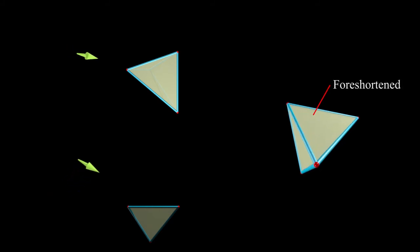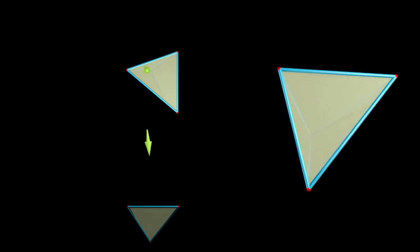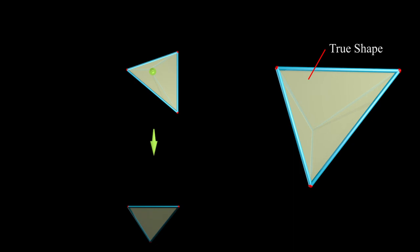If an edge is parallel to the folding line, then in the next view, it's true length. As we come up, if we look parallel to an edge, we get an edge view. If we keep going, the view is foreshortened until we get perpendicular to the view, where then we get true shape.